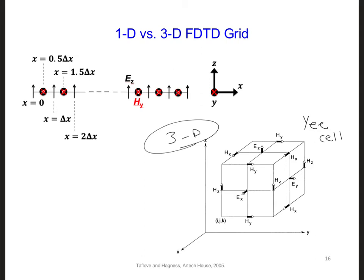If we draw any straight line through this Yee cell, then we would get alternating electric and magnetic field components as we had for the one-dimensional grid that we used earlier.